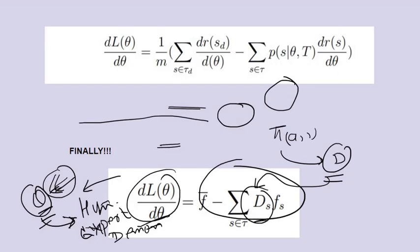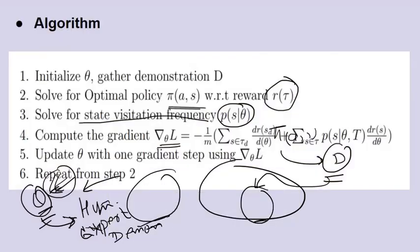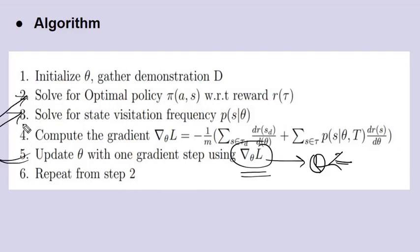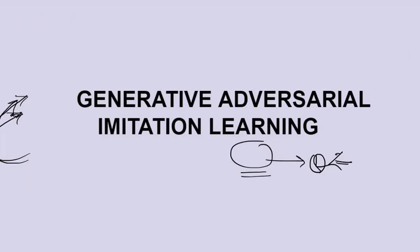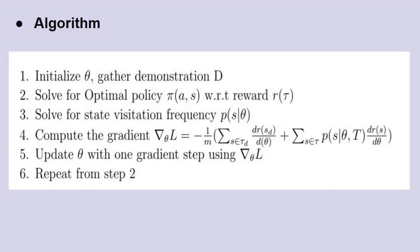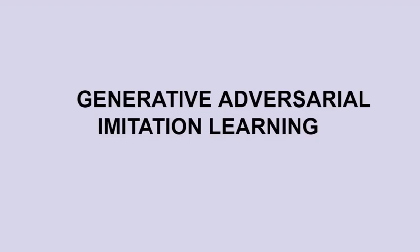We update theta with the gradient and repeat this process until we get the optimal policy that resembles and can regenerate the human demonstrations. I think that explains Maximum Entropy Inverse Reinforcement Learning. If you want to know more, please let me know in the comments what you didn't understand. In the next video we are going to go through Generative Adversarial Imitation Learning, which is also very well known.